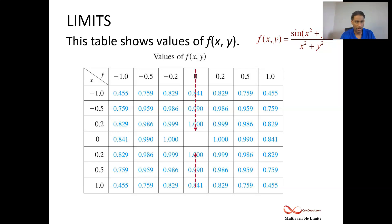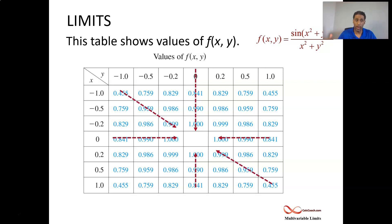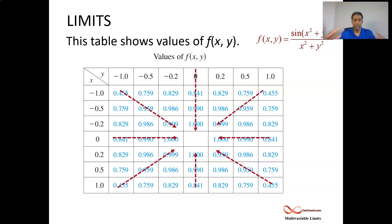Approaching along y equals 0, that's the x-axis, it looks like it's going towards 1. The y-axis also looks like it's going towards 1. We could even approach along the line y equals x, or y equals negative x — they all seem to be approaching 1. So we should have an idea that the limit is equal to 1, but we don't know for sure. We have to prove it.